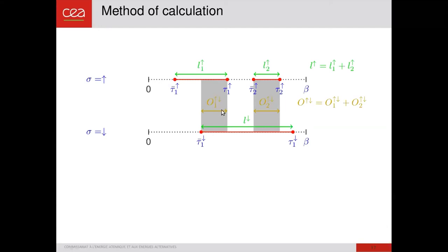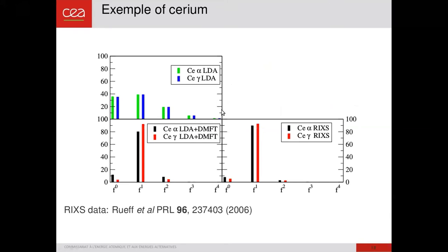So let's see the application to cerium. Cerium is a system which is interesting because it has two phases which have the same structure, FCC. The alpha phase has a low volume and the gamma phase a large volume. If we compute the weight in LDA, we see that a lot of configurations have a large weight. F0, F1, F2 have large weight. So it's similar to what I was describing for the H2 molecule without interaction. If we now put a U in these F electron orbitals and solve the problem in LDA plus DMFT, you recover the fact that the F1 configuration is much larger in intensity.